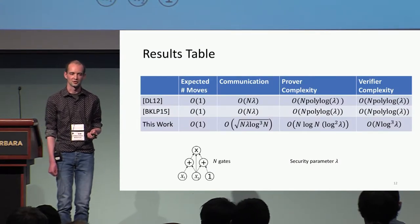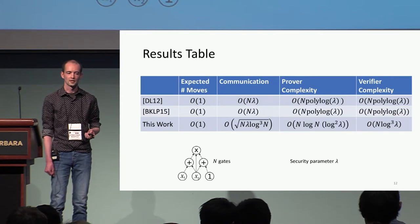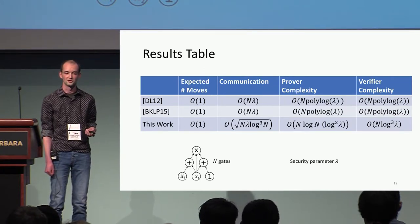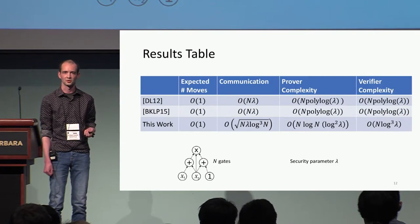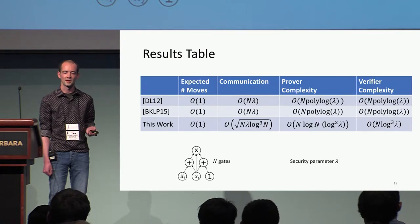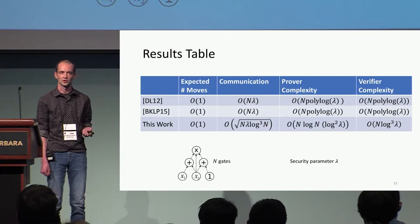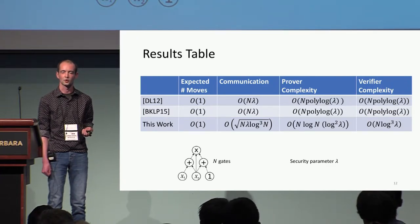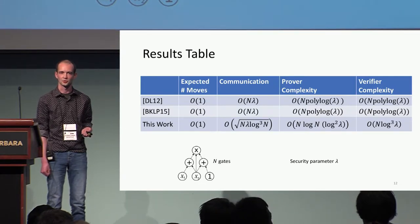Here's a quick summary of our results. If there's an arithmetic circuit with N gates, the prover can prove to the verifier that the circuit is satisfiable using roughly square root N bits — that's a square root cost relative to the size of the circuit. The prover complexity and verifier complexity are just quasi-linear in the size of the circuit. This beats previous works which all had linear communication complexity.